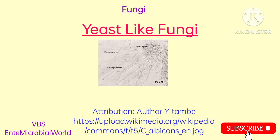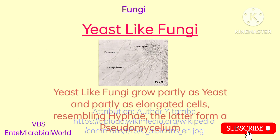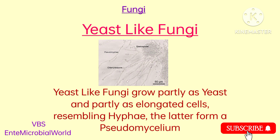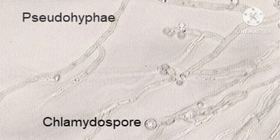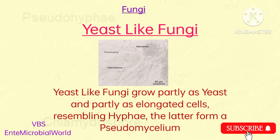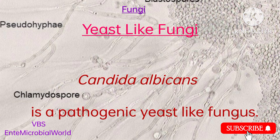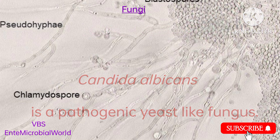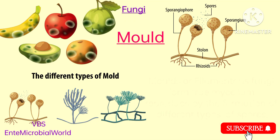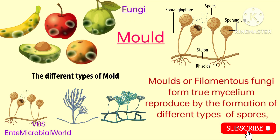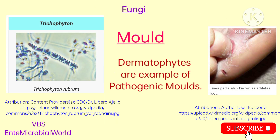Yeast-like fungi grow partially as yeast and partially as elongated cells resembling hyphae. The latter form is called pseudomycelium. Candida albicans is a pathogenic yeast-like fungus. Molds or filamentous fungi form true mycelium and reproduce by the formation of different types of spores. Dermatophytes are examples of pathogenic molds.